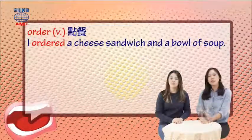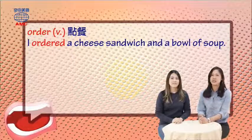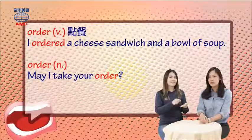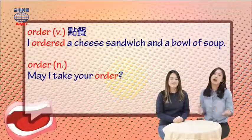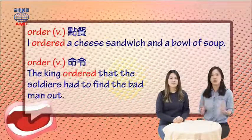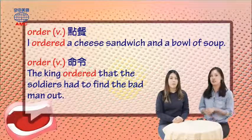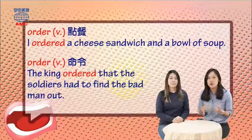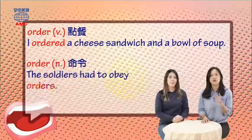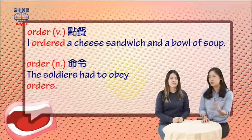除了當動詞之外，order還可以當名詞來使用哦。當你到有服務生的餐廳，他們會過來為你點餐，他可能就會跟你說：May I take your order?「我可以為你點餐了嗎？」這邊的order就是名詞的用法。另外order還有命令的意思：The king ordered that the soldiers had to fight the bad man out. 國王下令要士兵們找出壞人。The soldiers had to obey orders. 那這邊orders就是名詞。